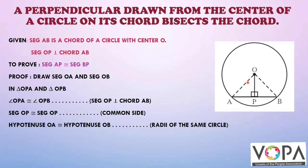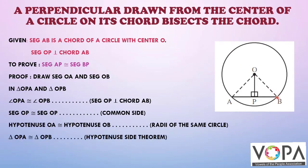Hypotenuse OA equals hypotenuse OB, as both are radii of the same circle. Therefore, triangle OPA is congruent to triangle OPB by the hypotenuse-side theorem. Therefore, segment PA is congruent to segment PB by corresponding sides of congruent triangles.